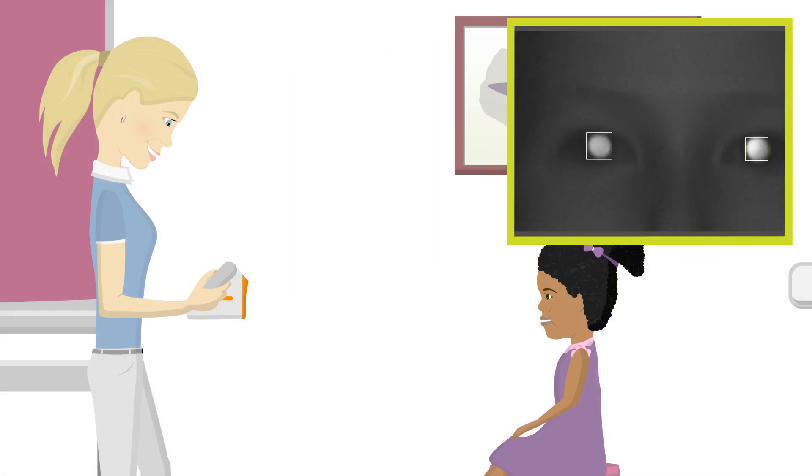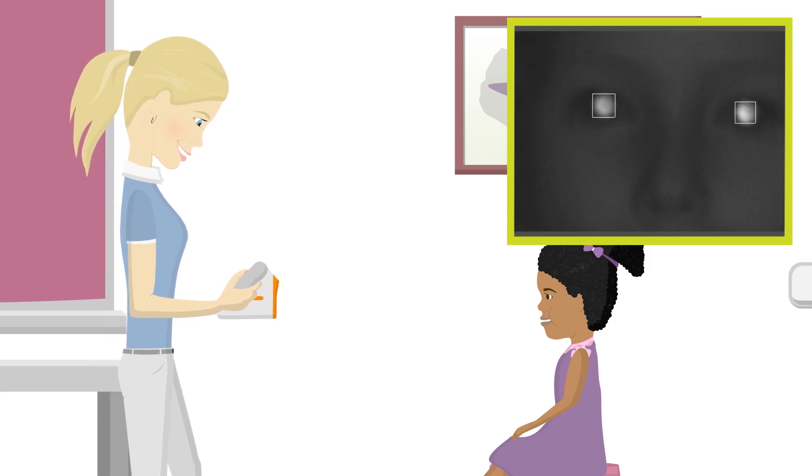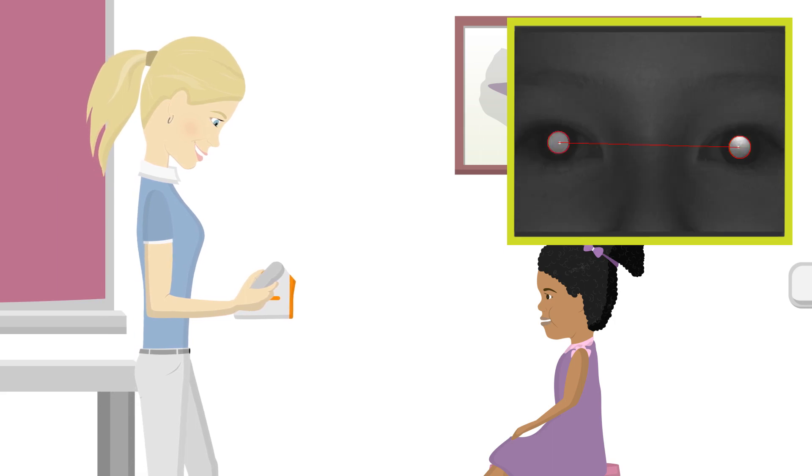Since Anna is standing too far from the child, she will see white squares around the pupils in a blurred picture. As Anna moves forward, the squares will turn to red circles and the picture is in clear focus.